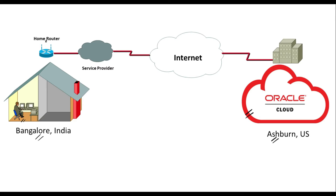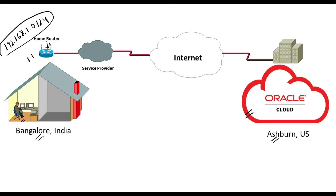This is the home router provided by my service provider. It has a DHCP pool of 192.168.1.0/24 and its interface has an IP of .1.1. All devices at home connected to this router get an IP address from this range. This router works as NAT, and at this end we have a public IP address — for example, 1.1.1.1 — which is PAT, translating all private IP addresses to one public IP address. This is the service provider, this is the internet, and this is the Oracle data center.